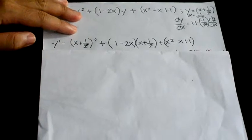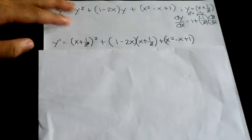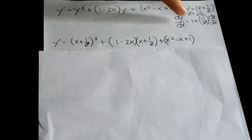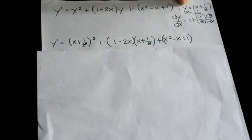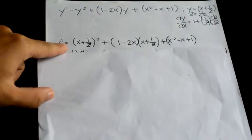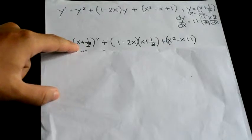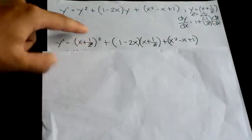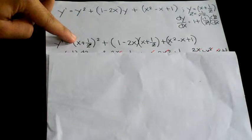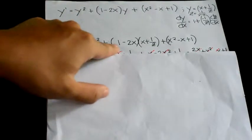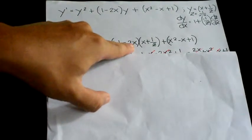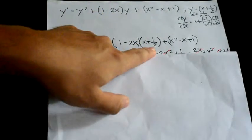Note that z here is equal to 1 over y minus x, which we will be needing later. Now substitute the variable y with x plus 1 over z. y prime is equal to x plus 1 over z, squared, plus 1 minus 2x times y, which is x plus 1 over z.